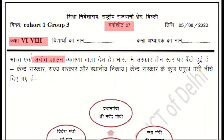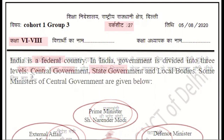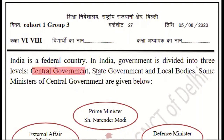The other name in English for Sanghiye Sashan is the federal government. In India, there are three levels of government: Central government, State government, and local bodies.